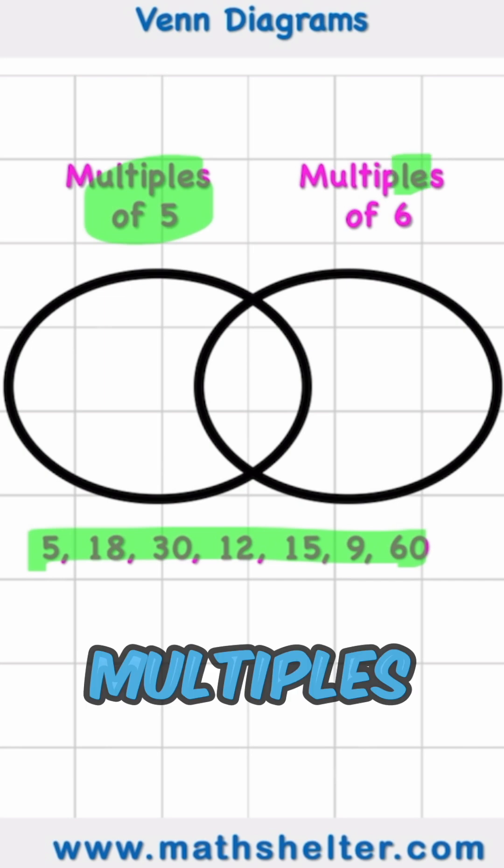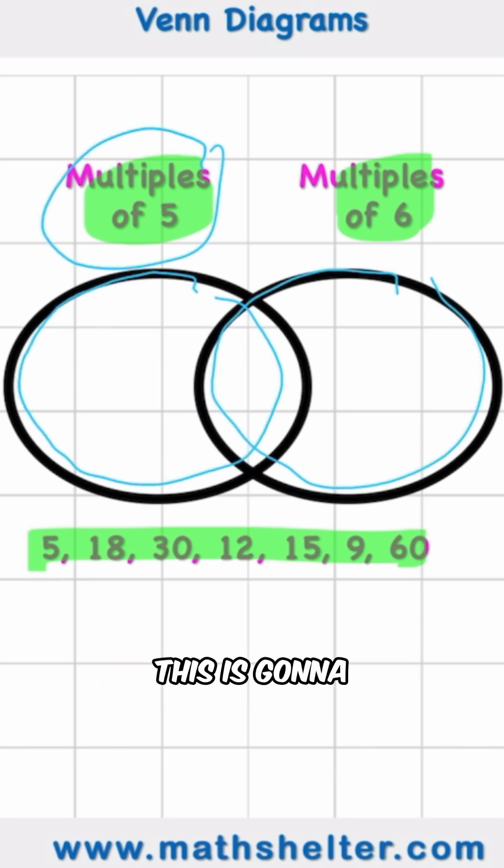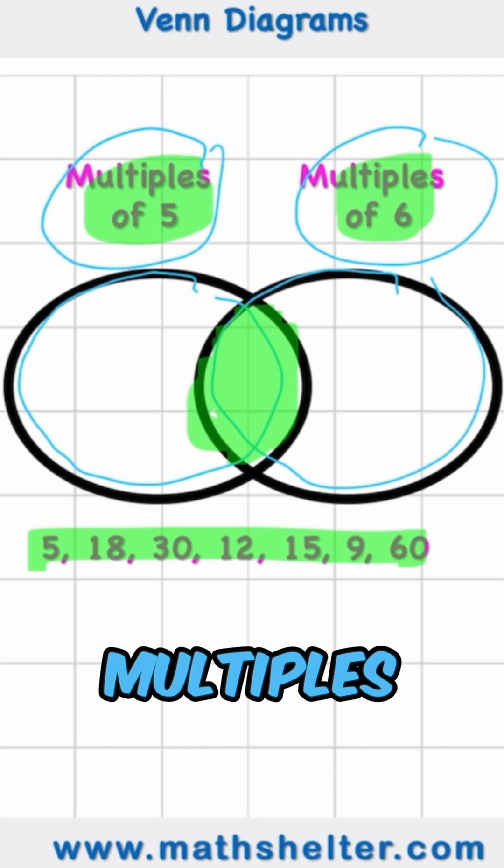Multiples of 5 and multiples of 6 in this case, but when our data has a shared piece of information. So we have two circles here. The circle on the left, this is going to be multiples of 5. The circle on the right, this is going to be multiples of 6. But then we have this little shared area here for numbers that are both multiples of 5 and multiples of 6.